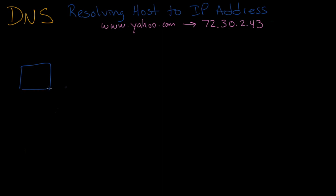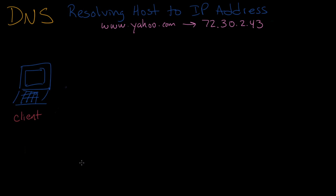It all starts with your computer. Your computer is a DNS client. A DNS client is one that issues a request to do a forward lookup, and a DNS server is one that answers that request in the form of a response. In order to do any kind of DNS lookup, your client computer needs to contact a DNS server — usually one that's fairly nearby, like one supplied by your internet service provider, or maybe one on your local area network in your router or in the IT department at your business.